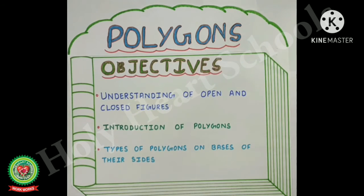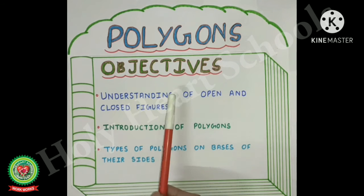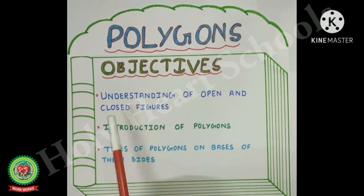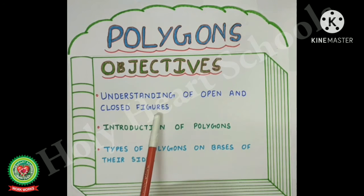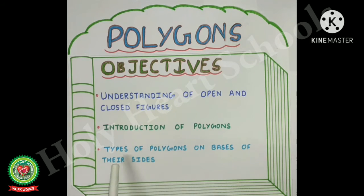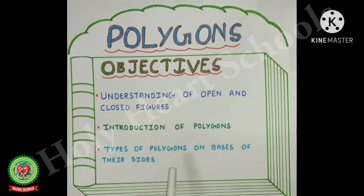Objectives of the chapter are: Number 1, understanding of open and closed figures. Number 2, introduction of polygons. Number 3, types of polygons on the basis of their sides.